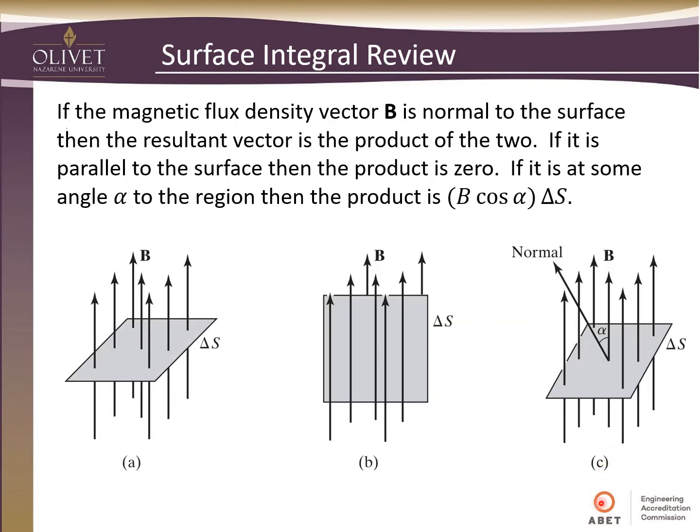So this would tell us then that if the magnetic flux density vector B is normal to the surface, as we see here in A, then the resultant vector of the magnetic flux and the surface vector would just be the product of the two, just like in the dot product. If it's parallel, then it would be zero.